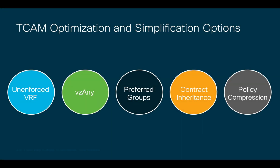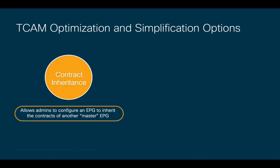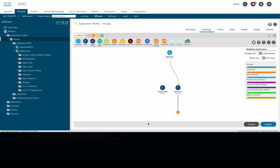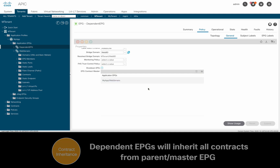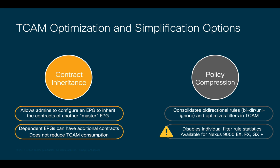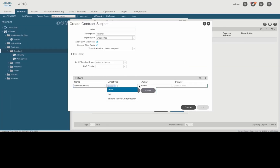For your reference, there are two more options that may be useful to know about. The first one is contract inheritance, which means you can assign an EPG to inherit the contract of another master EPG, simplifying your configuration. You simply configure it by going to the EPG and in the general tab, specify the EPG contract masters you want to inherit contracts from. The second one is policy compression, which consolidates the default bidirectional contract entries into a single one. Keep in mind that enabling compression disables individual filter rule statistics and it may have other restrictions. Policy compression can be enabled when you create a new filter in the directive section.